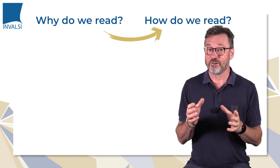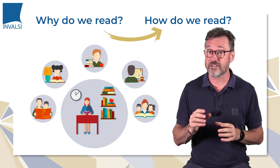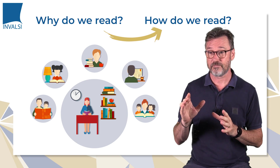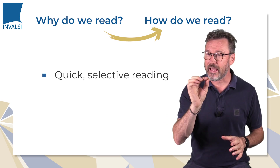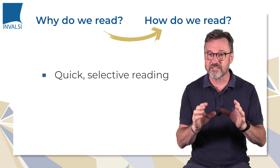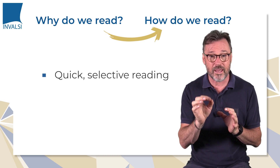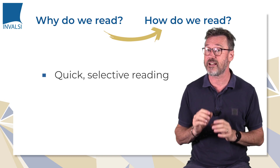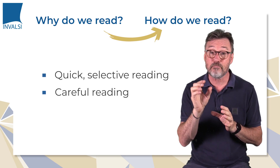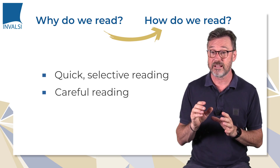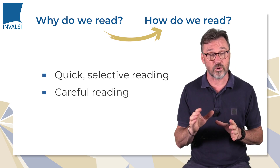How do we read in real life? In real life we read for various reasons and we use different reading styles according to our reading purpose. For example, quick selective reading — when we need to pick out specific information or important details, or if we want to get the gist of a text, we apply a quick and selective reading style. On the other hand, careful reading is when we need to understand the main ideas of a text and to infer the writer's opinion. In this case, we read more slowly and more carefully.